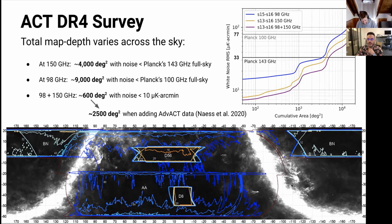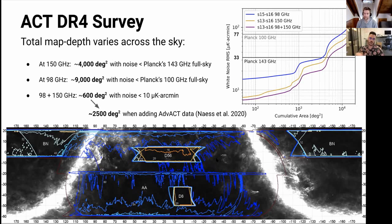Here is our footprint in equatorial coordinates — that's why the galaxy looks not horizontal as you usually see in a Planck map. We cover roughly 17,000 square degrees. We built this survey over the years, starting with small patches and growing the footprint. We covered the big wide part only in 2016, so it's still shallow, but we're building more signal-to-noise with integration time. To compare with Planck: over 4,000 square degrees, our noise at 150 GHz is better than the Planck 153 GHz full-sky average, and our 98 GHz is better than Planck's 100 GHz channel over 9,000 square degrees.